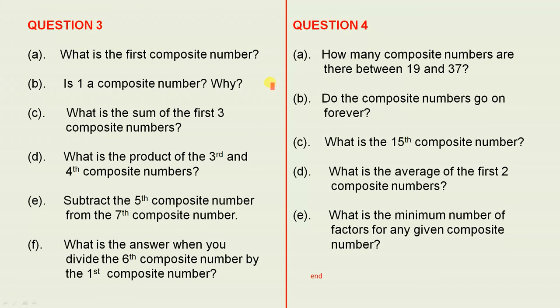Is 1 a composite number? Why? What is the sum of the first three composite numbers?